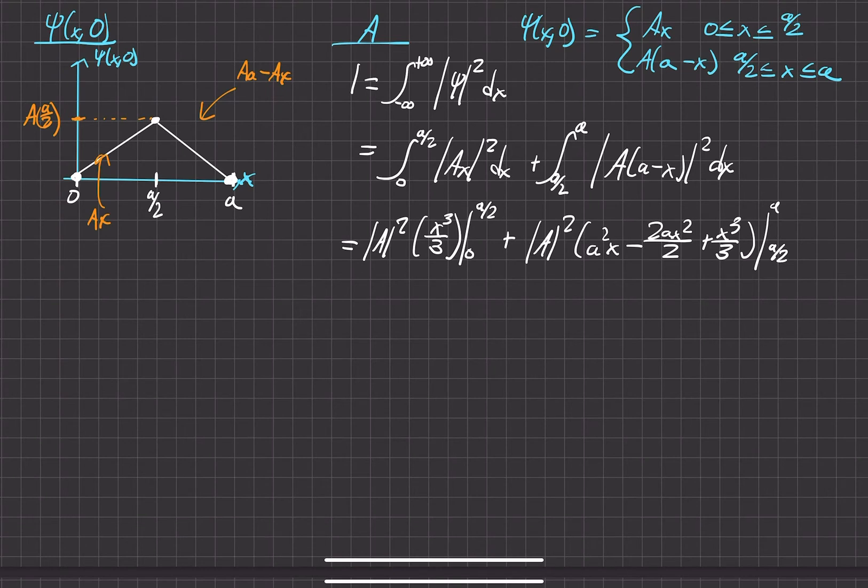So we'll go ahead and drop to the next line here and just go ahead and pull out that a squared. Since it's a constant and we know it's not anything crazy, we can just go ahead and undo the magnitude symbols. So this first one is going to be a cubed over three times eight. I'm just evaluating these limits here. Since it's minus zero, it's just going to be zero. So I won't even put that.